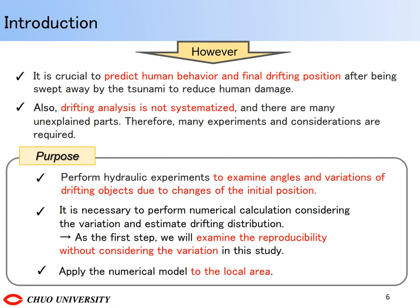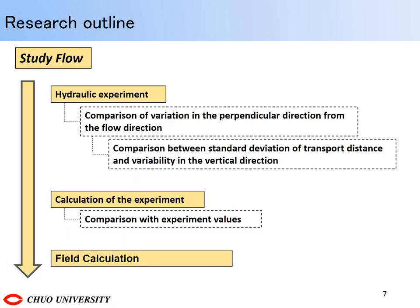This is the purpose of this study. First, perform hydraulic experiments to examine angles and variations due to changes in the initial position. It is necessary to perform numerical calculation considering the variation and create a drifting distribution. As the first step, we will examine the reproducibility without considering the variation. Finally, adapt the current numerical model to a local area. These are the study flow of this research.